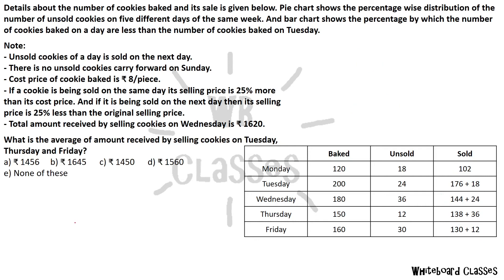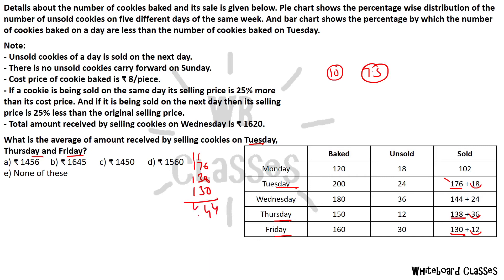The question asks: what is the average amount received by selling cookies on Tuesday, Thursday and Friday? Cookies sold on the same day at Rs. 10, and the remaining unsold cookies from the previous day sold at Rs. 7.5. The amounts are 176, 138, and 130. Adding those: 18 cookies at 7.5, 36 at 7.5, and 12 at 7.5 — that is 66 × 7.5 = 495.